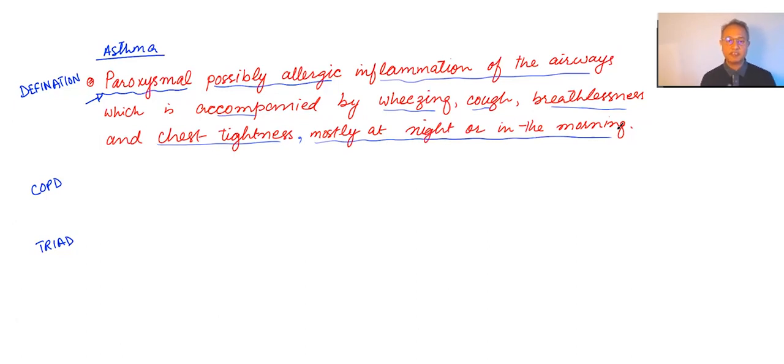So a patient that has cough, wheezing, chest tightness due to possibly allergies where this problem occurs intermittently can be called asthmatic. Not a great definition, I hope you understand, but we do not have a great definition. This is what asthma is. So then how do we differentiate the asthma from COPD?